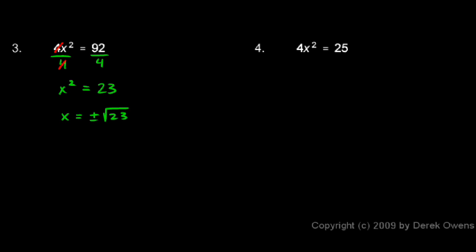In number 4, 4x squared equals 25. Again, I'll divide each side by 4, and on the left, the 4's cancel. And I'm left with x squared equals 25 over 4. And now I'll take the square root of each side.